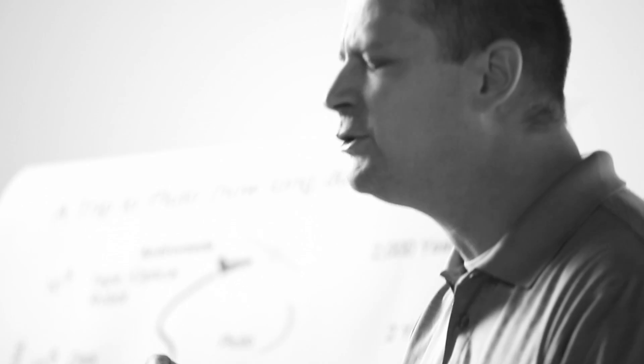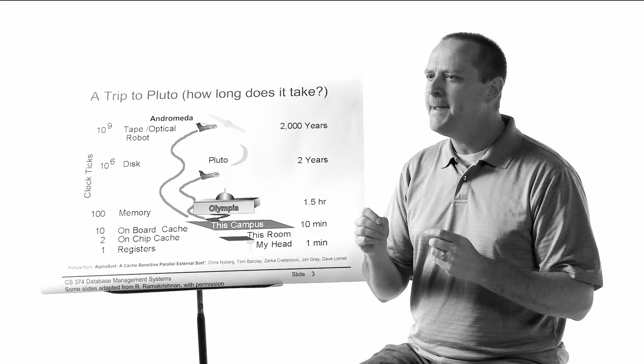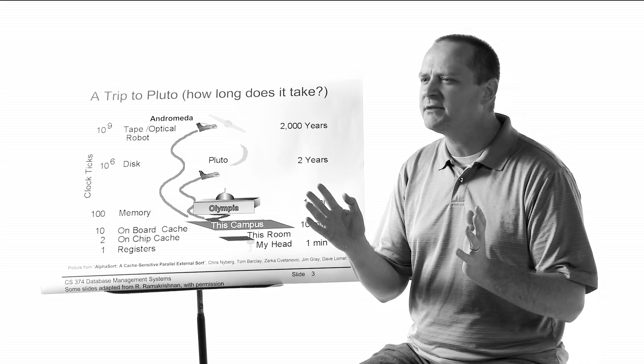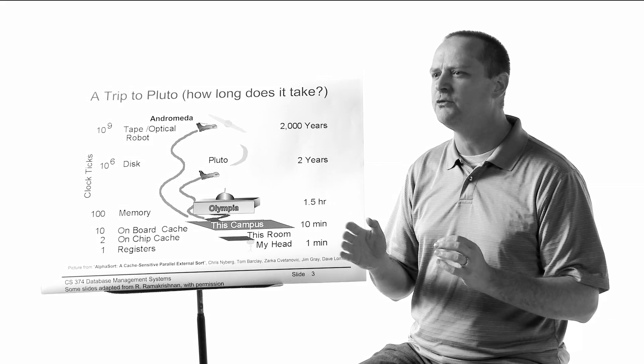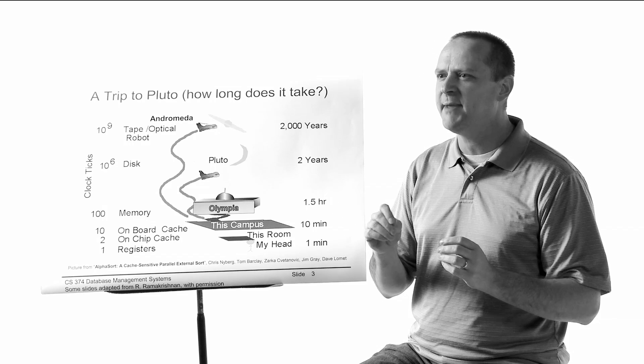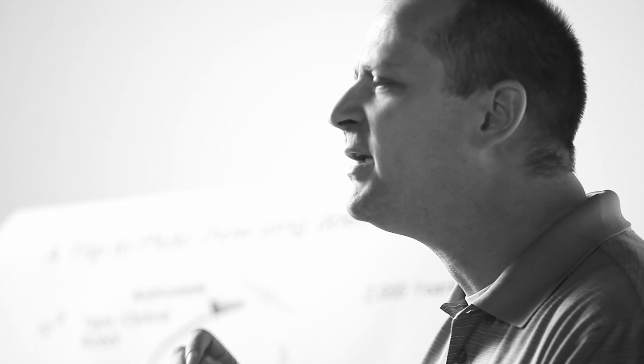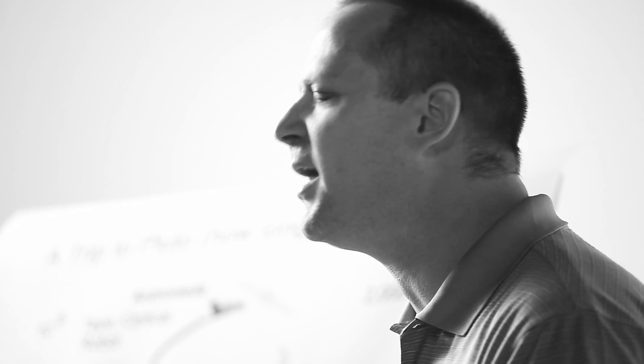Now a good information system can get you that information very quickly, but it's got a thousand plans to choose from. Which plan is it going to choose? The way it's going to make the decision is to say, how can I minimize the number of trips to Pluto I need to take?